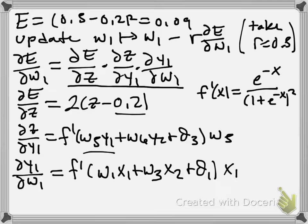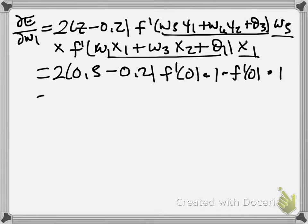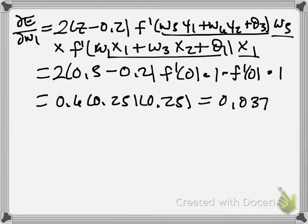So we get 0.25. So we end up with 0.6 times 0.25 times 0.25, which is equal to 0.0375.